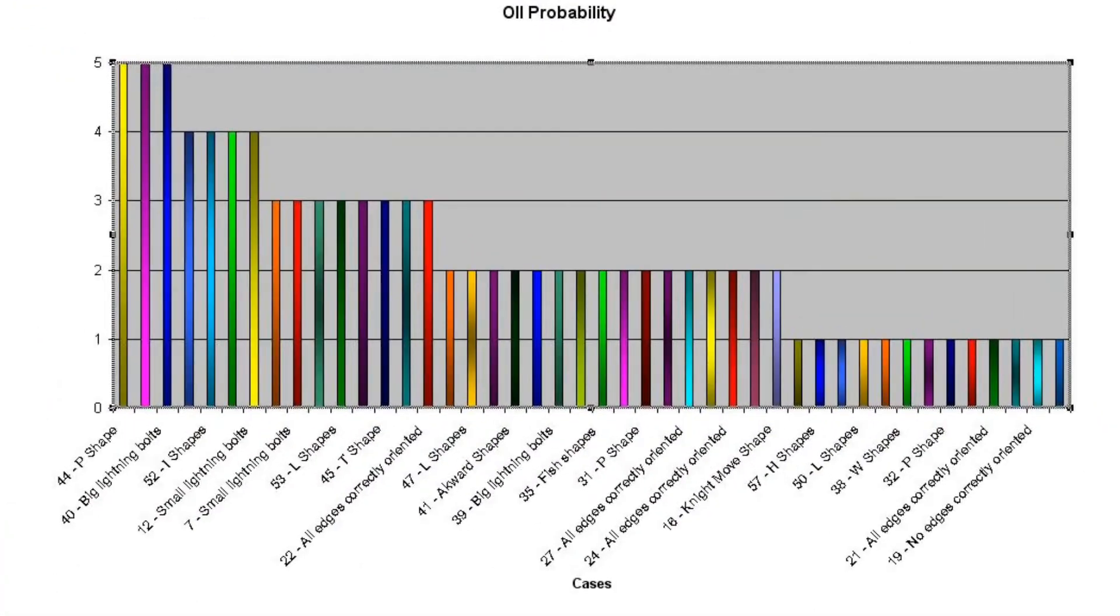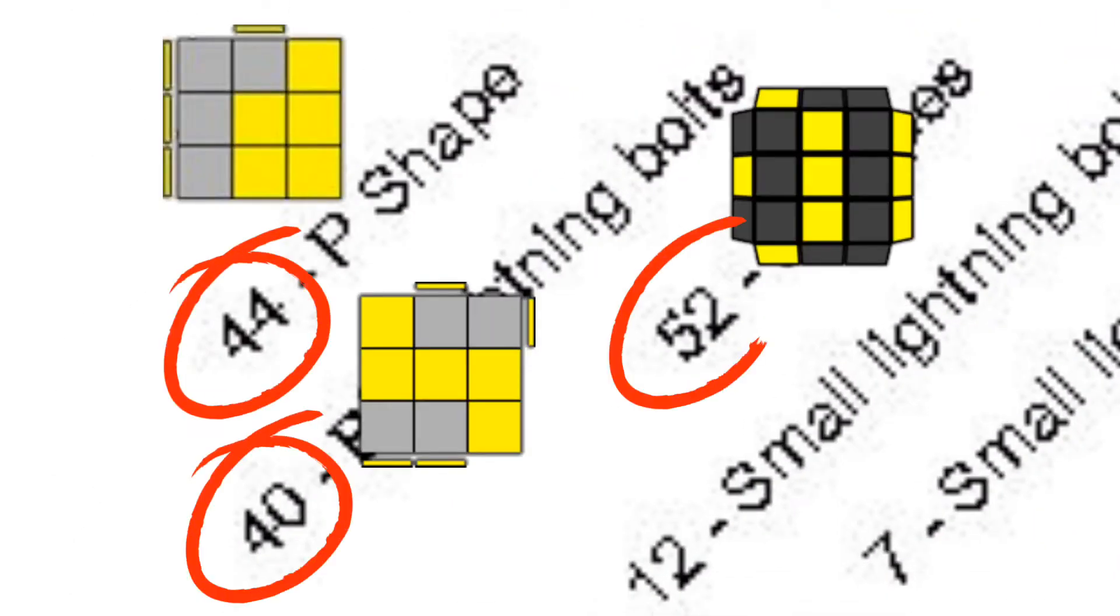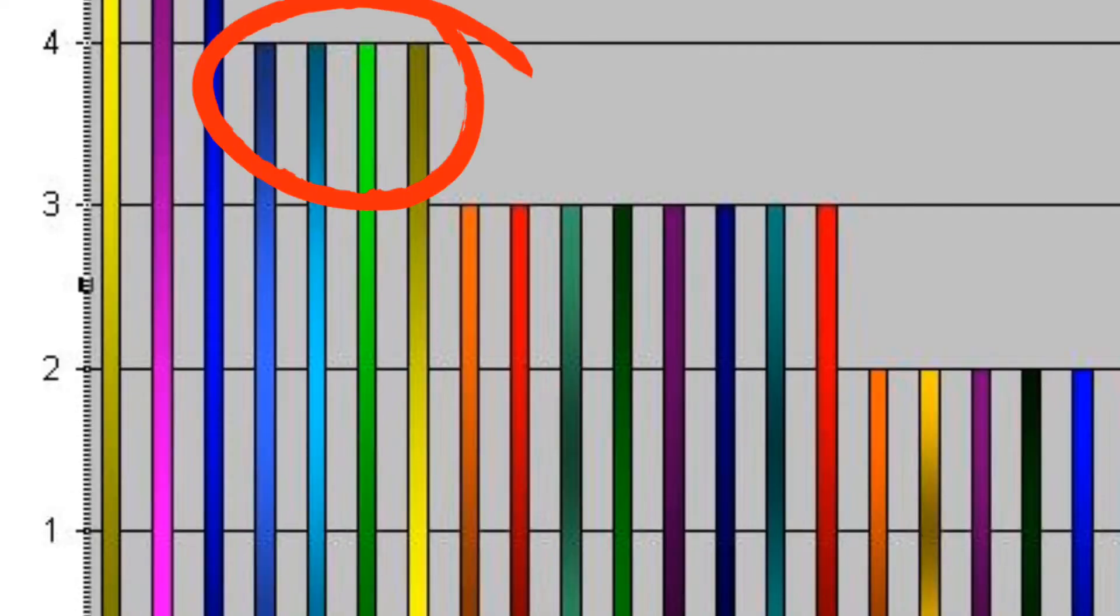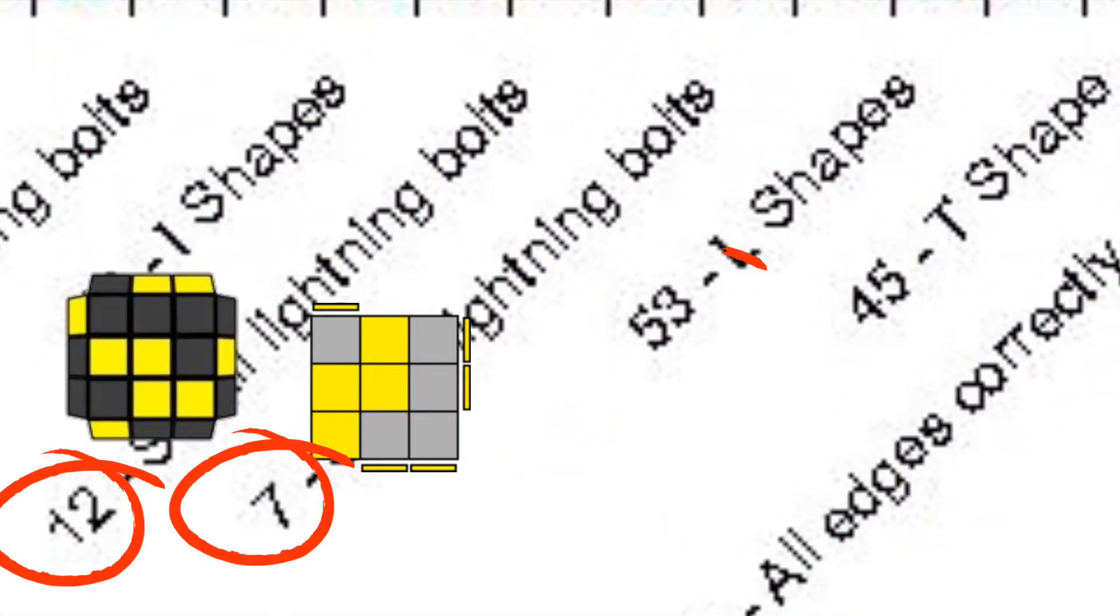Hey guys I'm here with the results. In first place we've got a tie between the cases 44, 40, and 52. I got all of these three cases five times out of 100. Now regarding the cases that are less common than the others, with a number of four we'll find the cases 12, 7, 53, and 45.